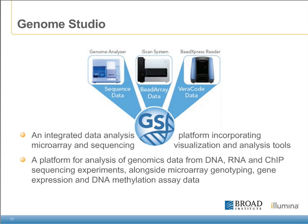Illumina's Genome Studio software is a very powerful tool that can be used to integrate the analysis of both microarray and sequencing-based platforms. It currently has the capabilities to analyze genomics data from both DNA, RNA, as well as ChIP-based sequencing experiments. We anticipate that as the platforms develop, so too will the software to incorporate more features and more tools for combining the analysis of both the sequencing and array-based products.